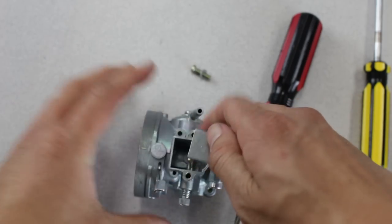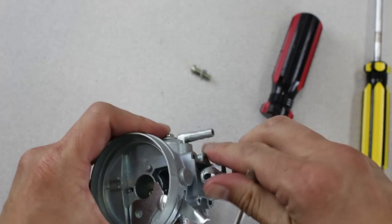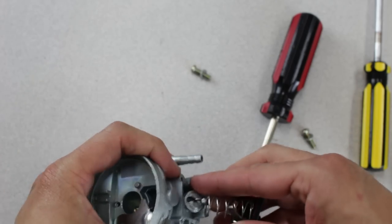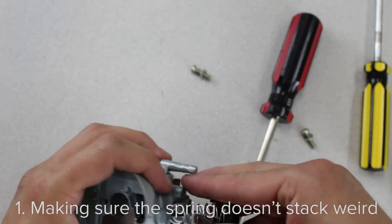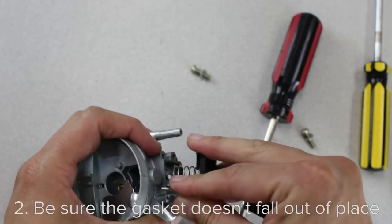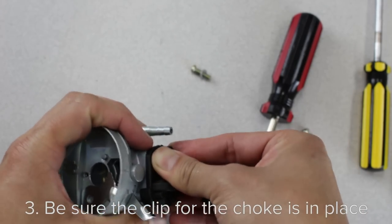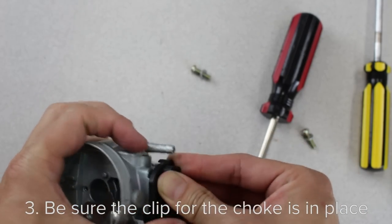Next is the hard part. We're going to put everything back in place. There's going to be three components that you have to keep in mind. One, making sure that the spring doesn't stack weird. Two, be sure the gasket doesn't fall out of place. And three, be sure the clip or the choke is in place.